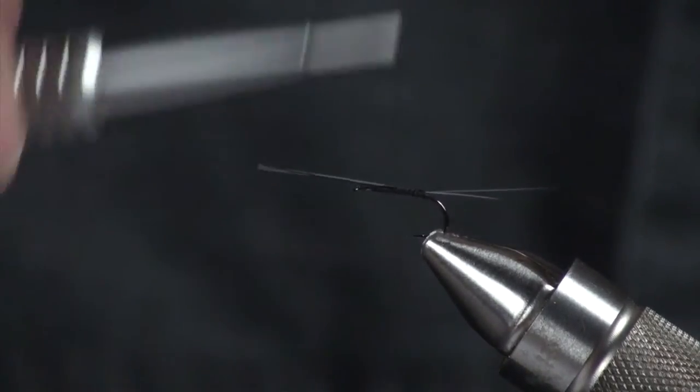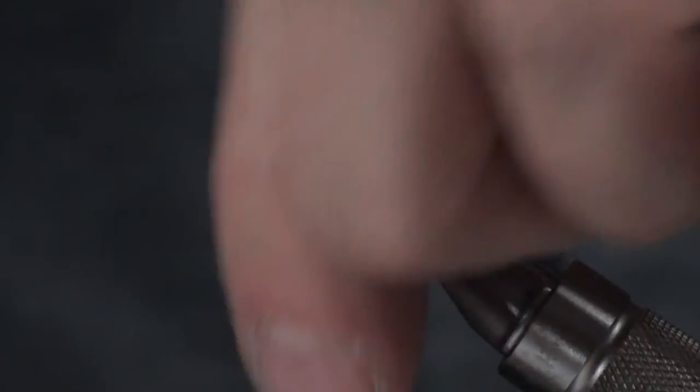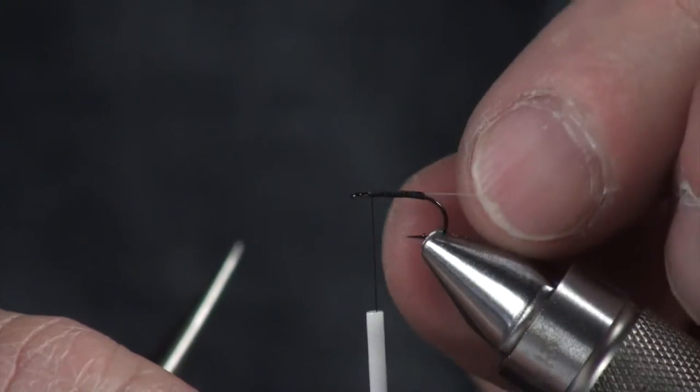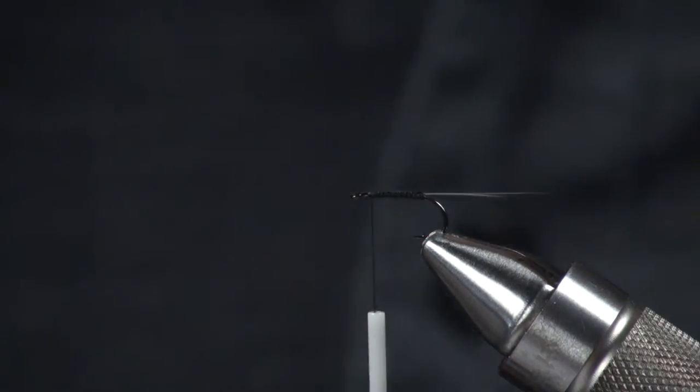I'm going to run my thread all the way up to where I tied in my thread at the very front. That ensures that I have a nice even body with no lumps or bumps, which we want.